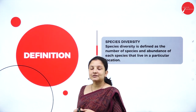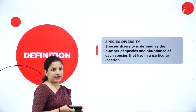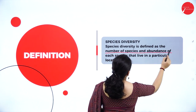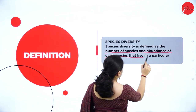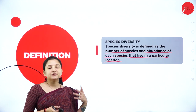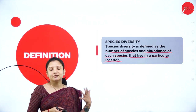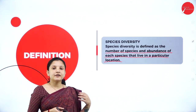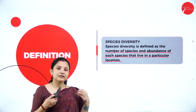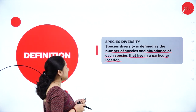Talking about species diversity — species diversity is defined as the number of species and the abundance of each of these species that live in a particular location. For example, species of butterfly, species of tiger, species of cat. Different types of species in a particular location — the differences in species in that location — we call it species diversity.